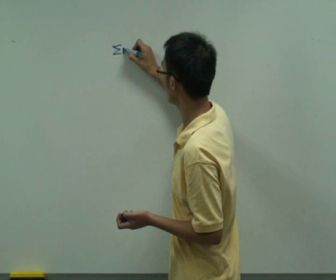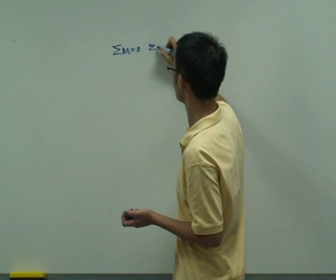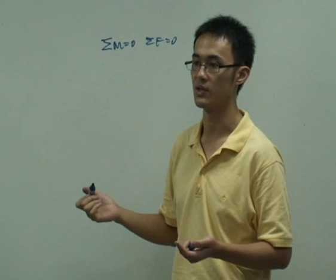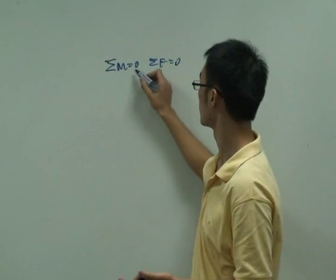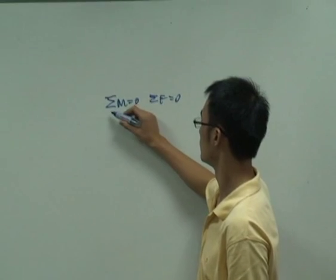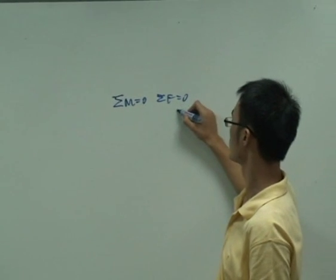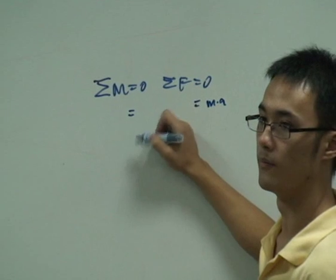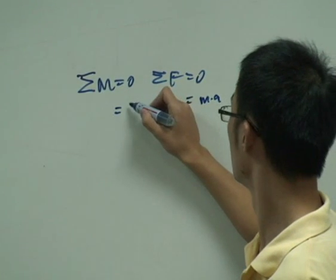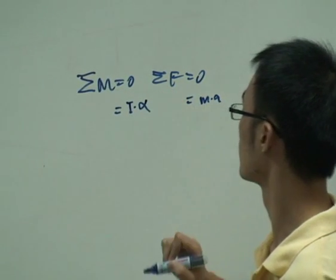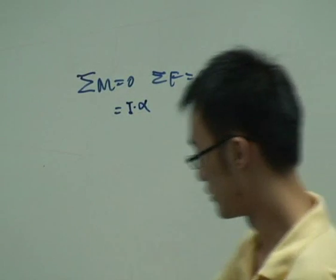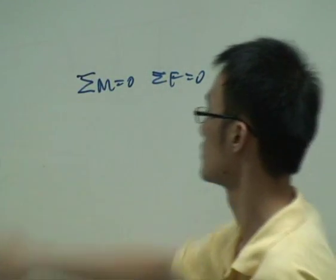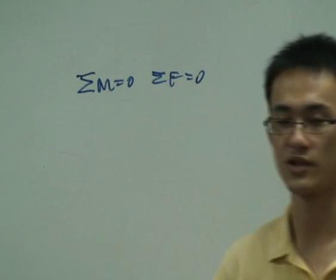Static equilibrium means sigma M equals zero and sigma F equals zero. For dynamics, it's different — if the object is moving, then your resultant force will give you M times A, and the resultant moment gives you I times alpha. So for MOM, you don't need to know the dynamics equations. You just need to know the static equilibrium. This is the force analysis.